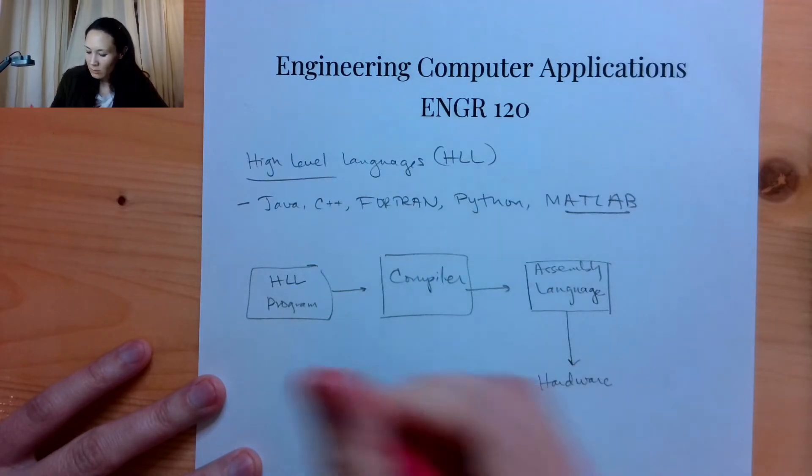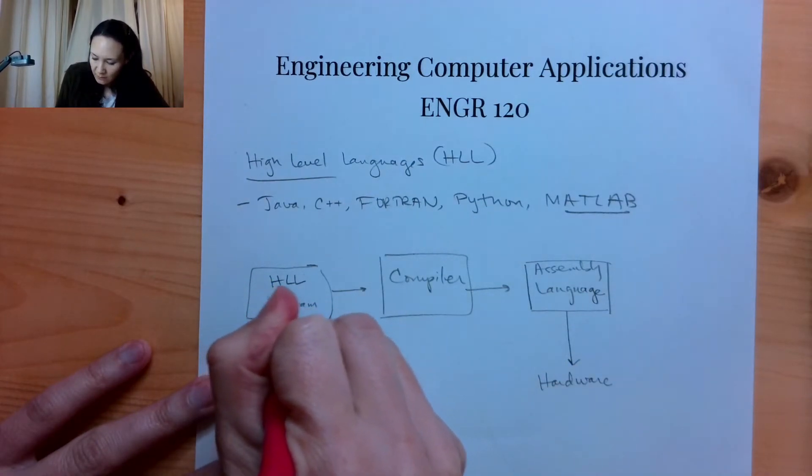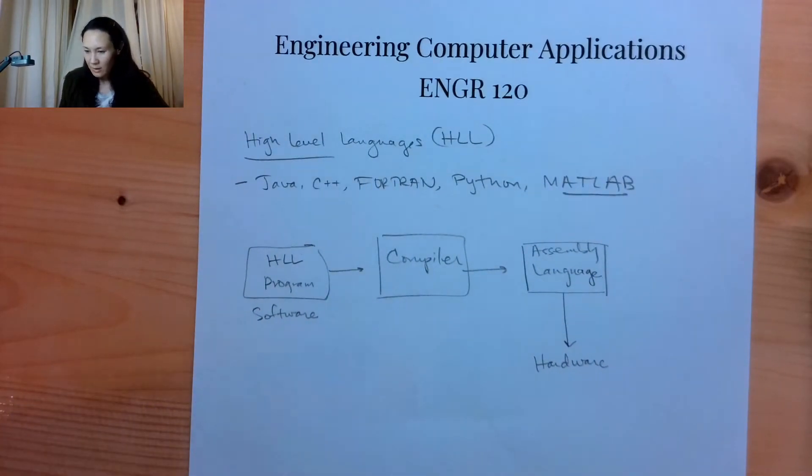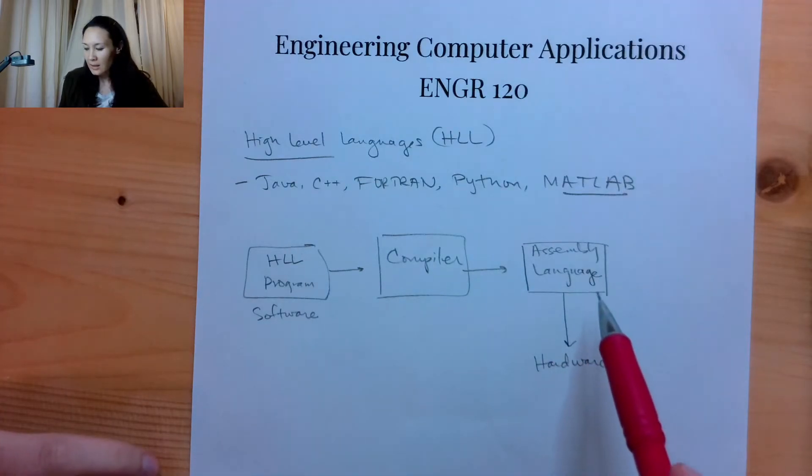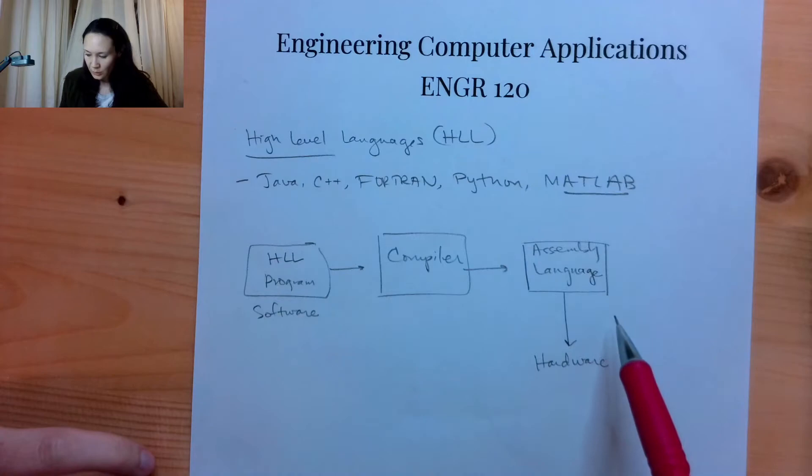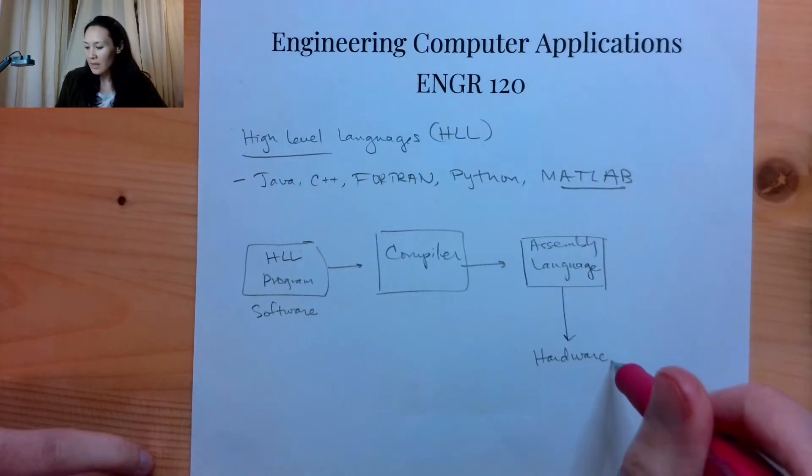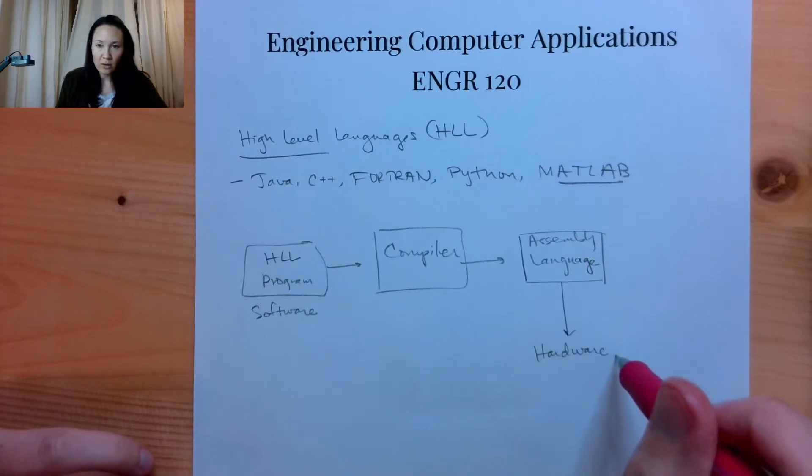So the hardware. So this is software, right? This is the program that we write with English words. It's compiled into a code that is understood by the hardware. So the hardware is the actual device of the computer.